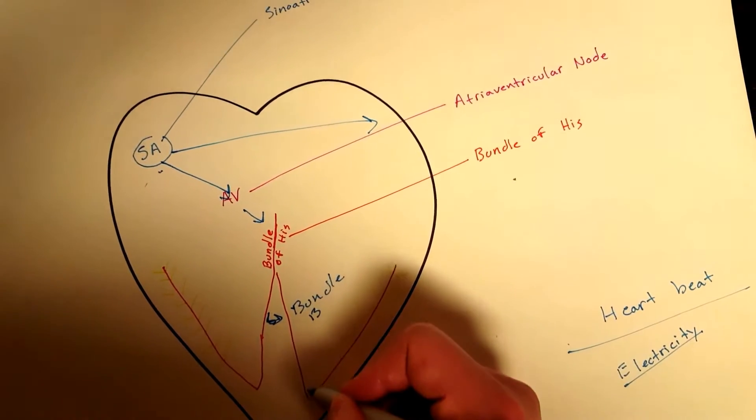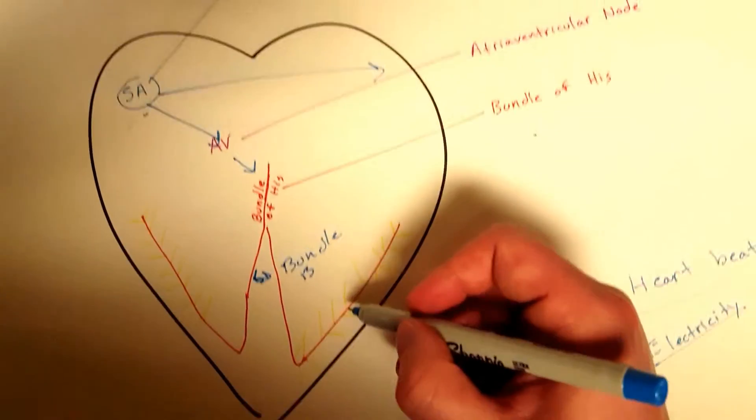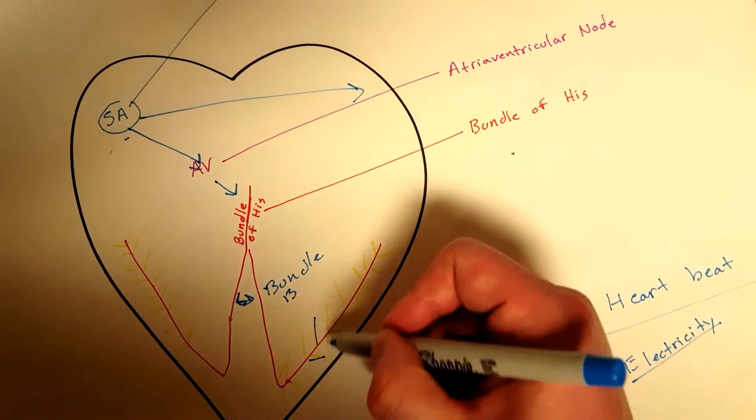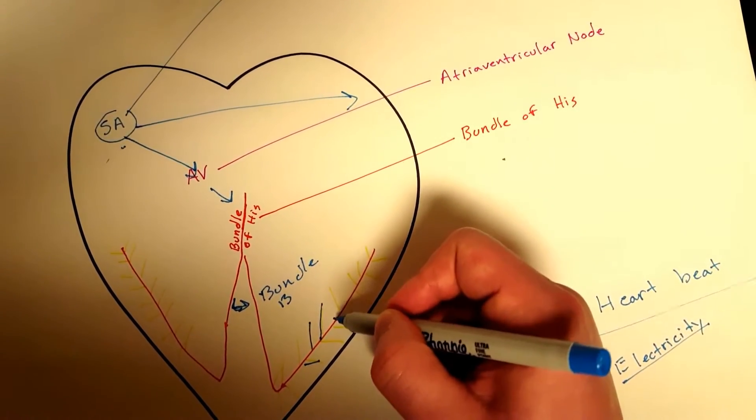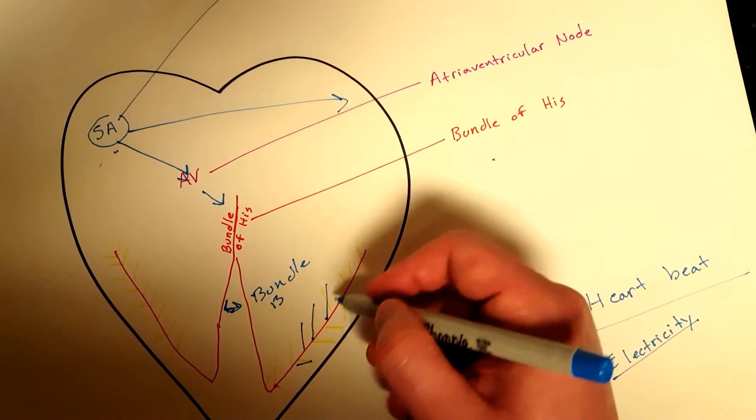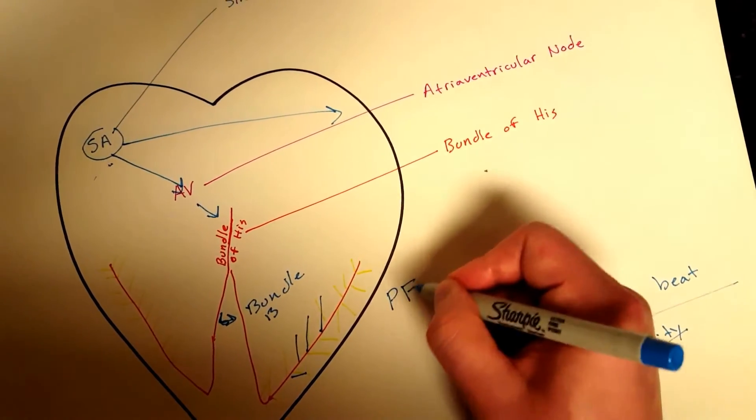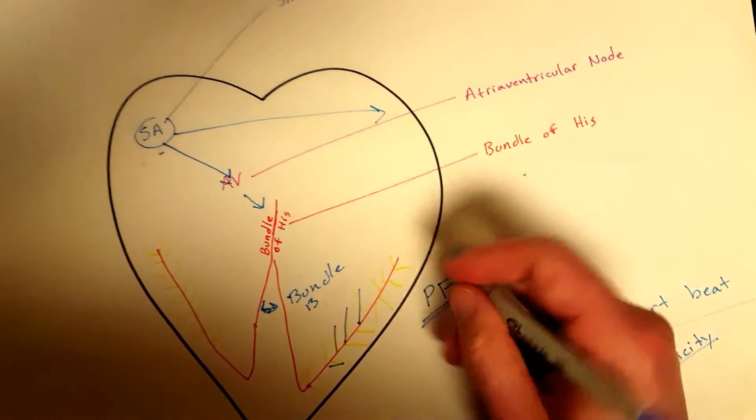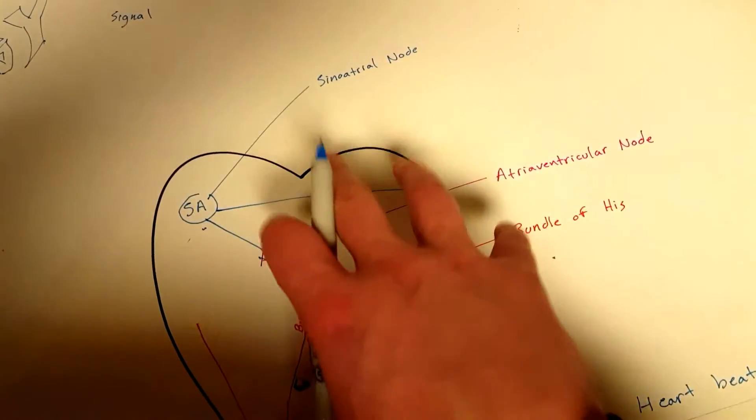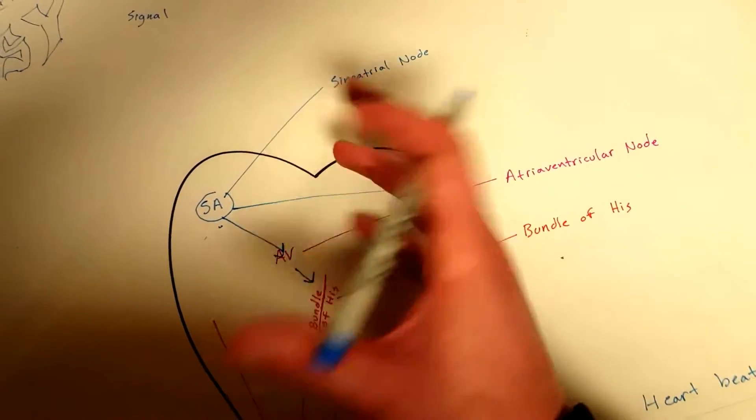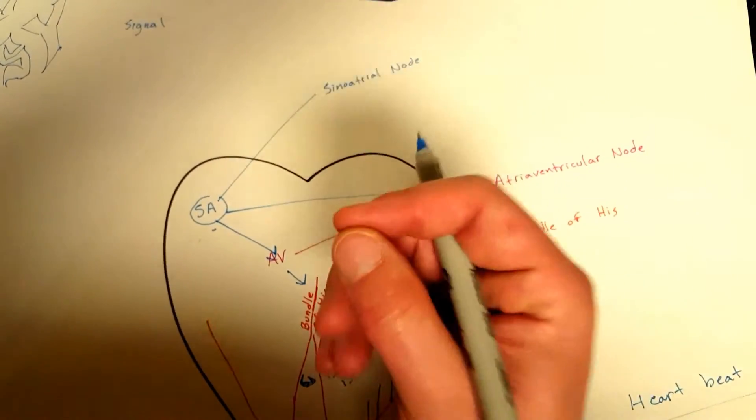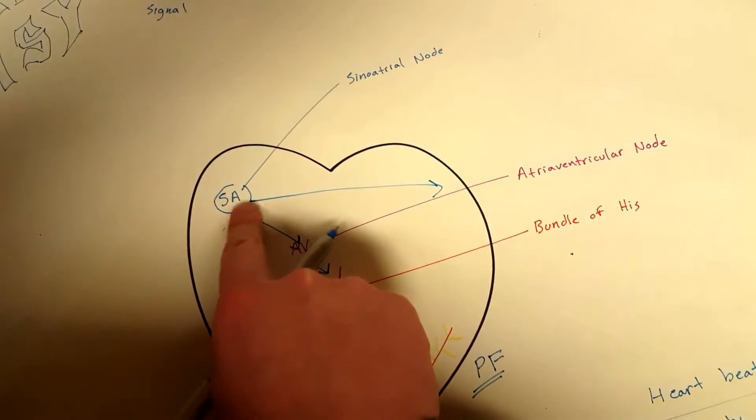And then it keeps on going. I'm not sure if you can see these, but there are little yellow lines that are kind of poking out. These are called your Purkinje fibers. I put PF, Purkinje fibers. So that's exactly how it works. Each contraction is generated by electricity.